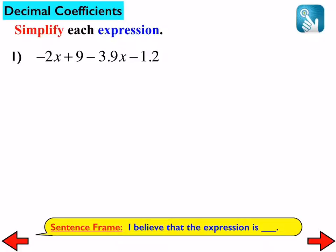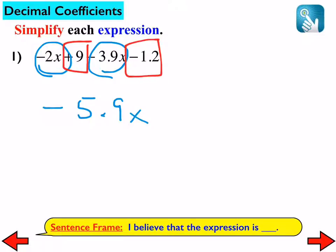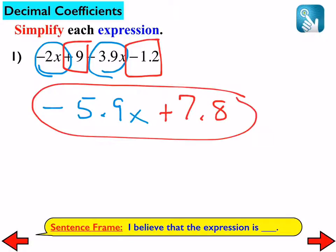Here we have an expression where we have some decimals in there. What we do is exactly the same thing that we did yesterday. We just have to pay a little more attention to what we're doing. So let's do number one together. I'm going to gather my x's together. I have negative 2x and a negative 3.9x. Those are like terms. Those two combine to make negative 5.9x. I'm now going to gather my constants together. We have a positive 9 and a negative 1.2. That is a positive 7.8.